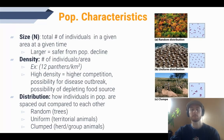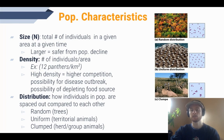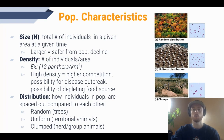First we'll talk about some basic population characteristics that are important to understand before we go into the factors that limit population growth. Population size is just the number of organisms in a population, sometimes denoted with the letter N. The larger a population is, generally the safer it is from population decline, due to factors like genetic diversity that allow organisms to adapt to new environmental conditions. Certain species also get protection from predators by having a large herd.